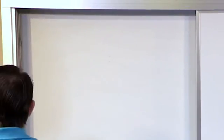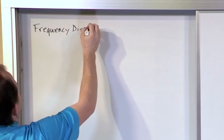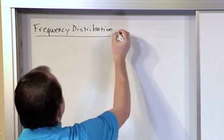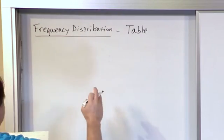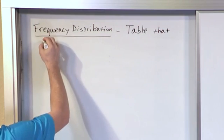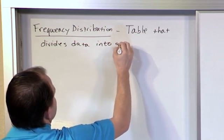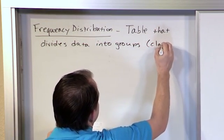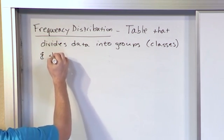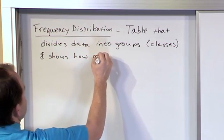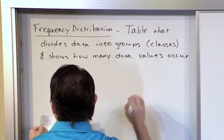So, frequency distribution — let me write that down. It's a simple definition: it is a table that divides data into groups. We call these groups classes, and it shows how many data values occur in each group.